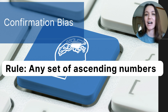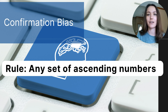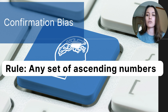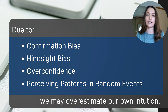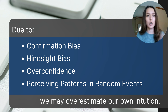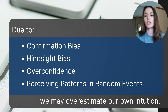Wason's actual rule was simply any set of ascending numbers — so 1-2-3 or 57-58-59 would both fit. The confirmation bias affects our real lives; when we are aware of it, we can think more critically rather than simply accepting evidence that fits our assumptions. To summarize: confirmation bias, hindsight bias, overconfidence, and our tendency to perceive patterns in random events can all lead us to overestimate our intuition. We must rely on scientific inquiry to help us determine what is real and true about the mind and behavior.